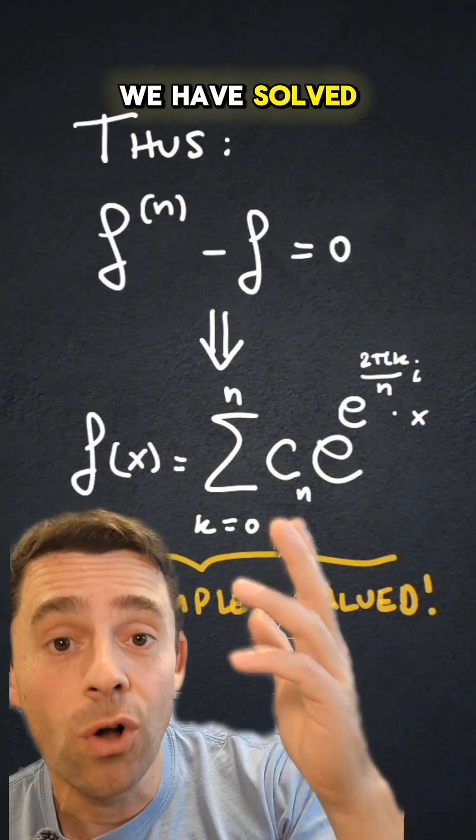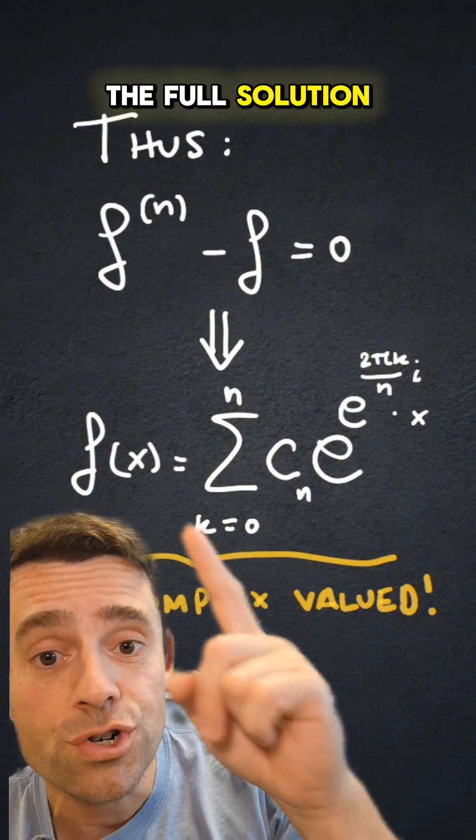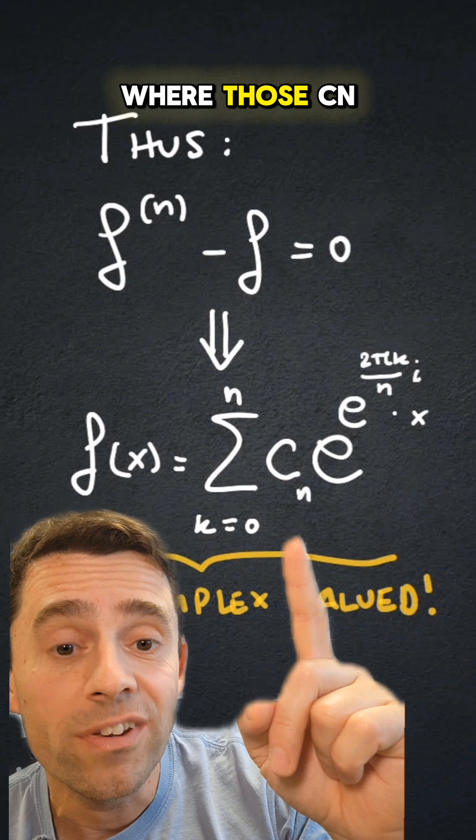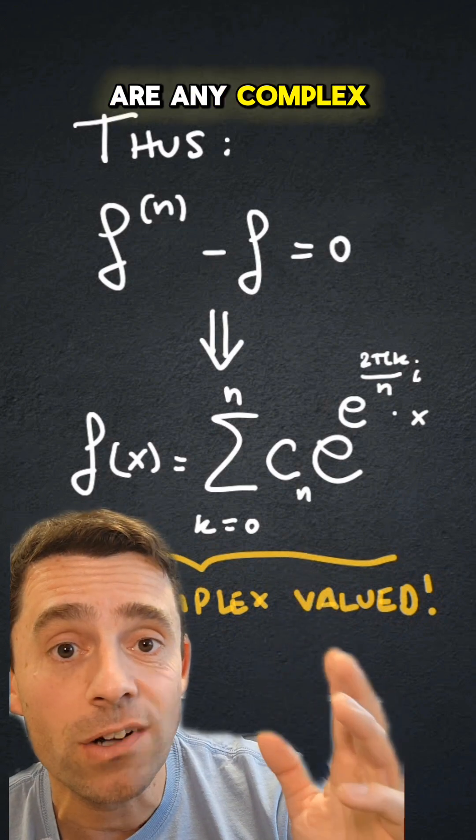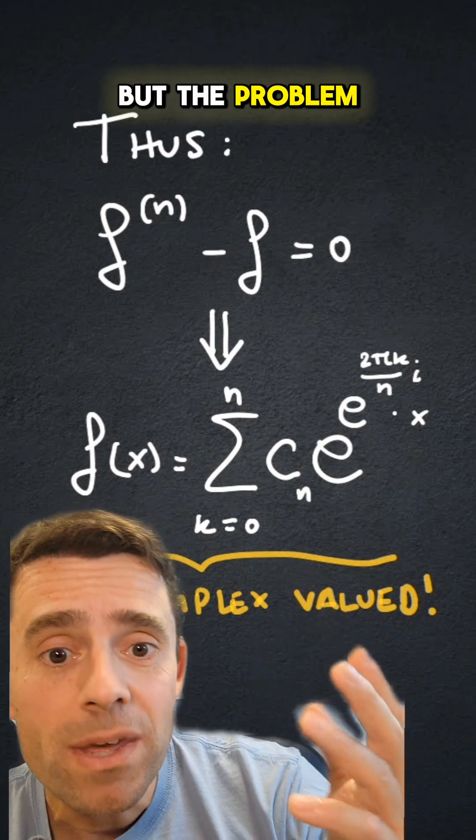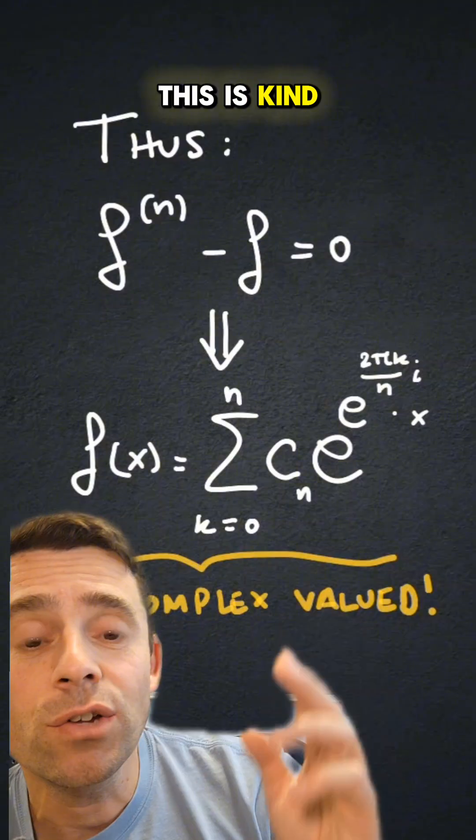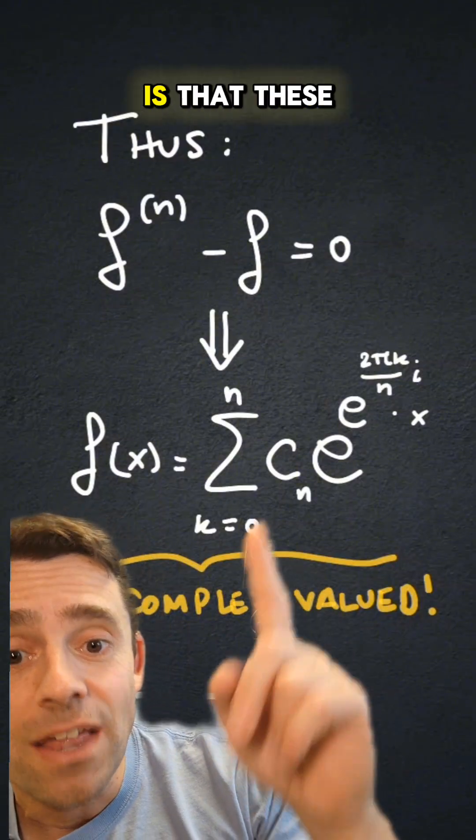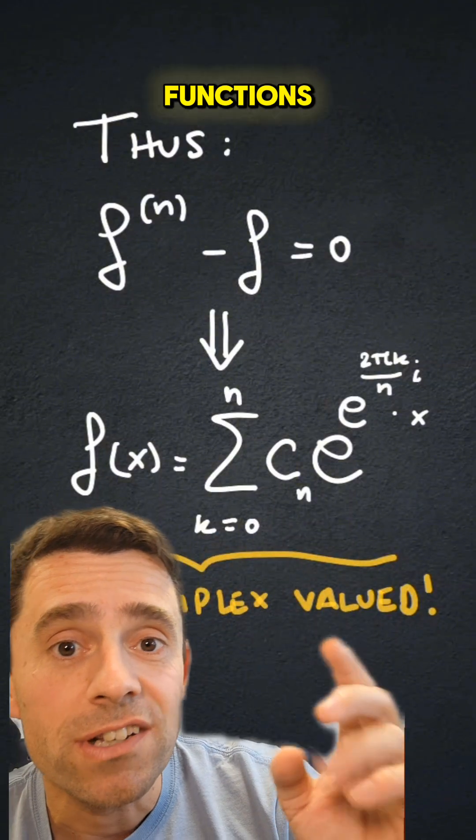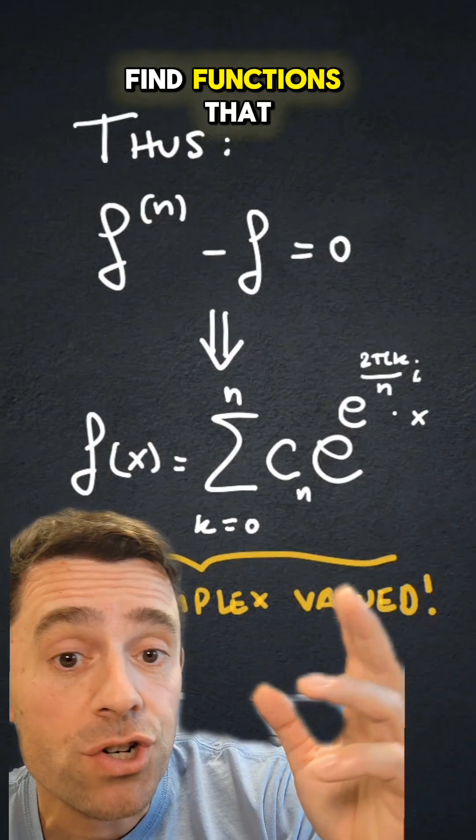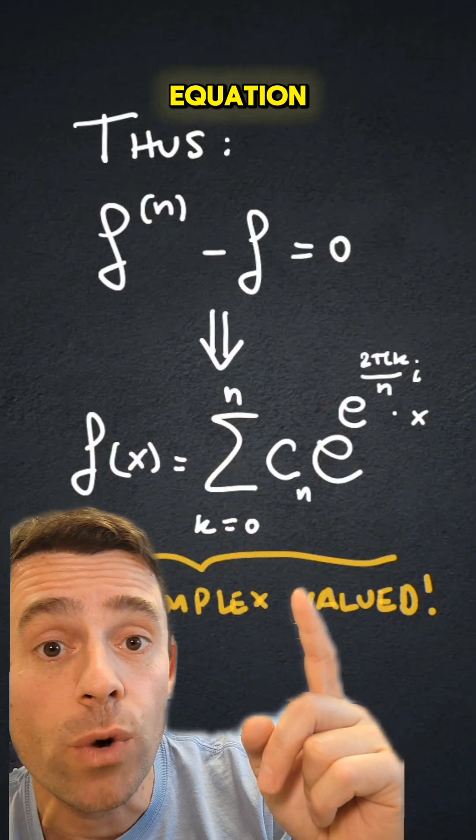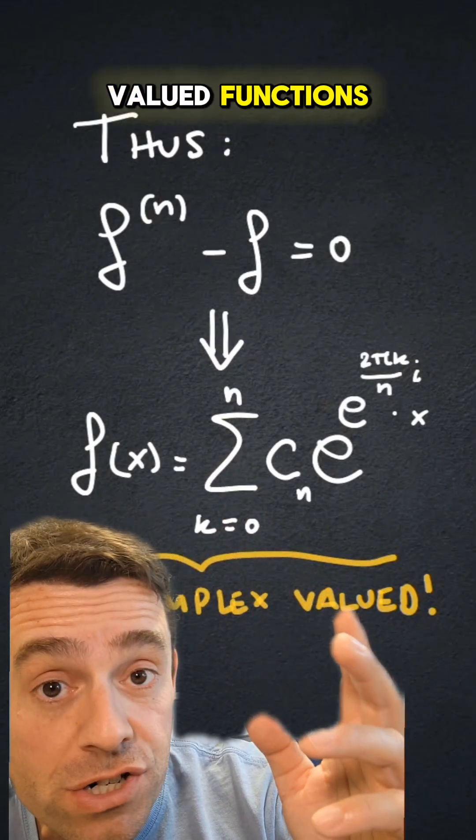So there you go, we have solved our differential equation. The full solution is a function of this form where those cn are any complex constants. But the problem is that, for one thing, this is kind of ugly, and the second is that these are complex valued functions. So can I find functions that satisfy that differential equation that are real valued functions?